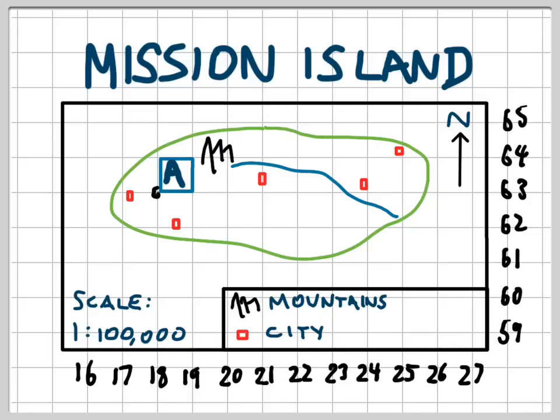So when we do that here, we go to this bottom corner. So we're going to go across first until we reach our easting, which is 18. And then we're going to go up until we reach our northing, which is here at 63. So the 4-figure area reference for the area marked with the letter A is 1863.